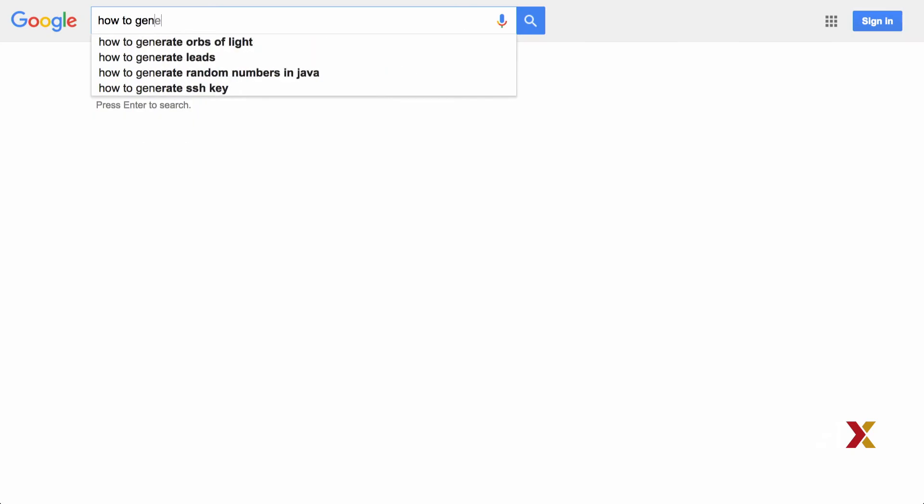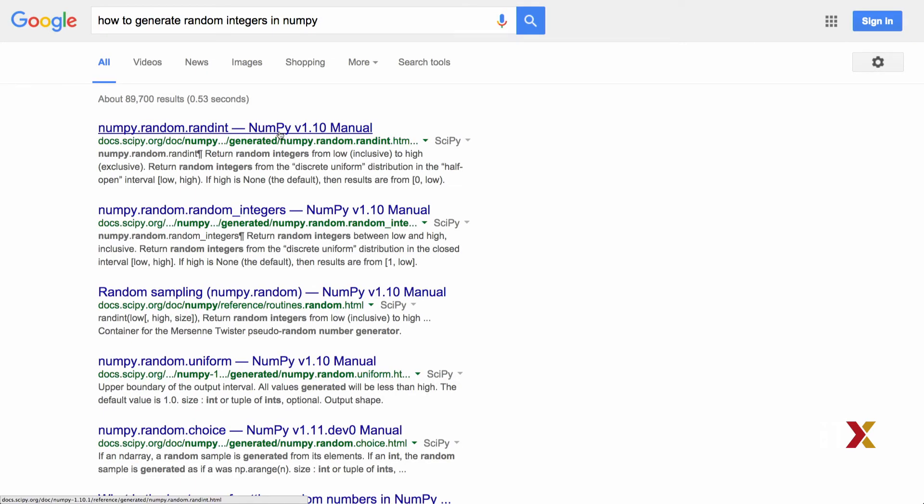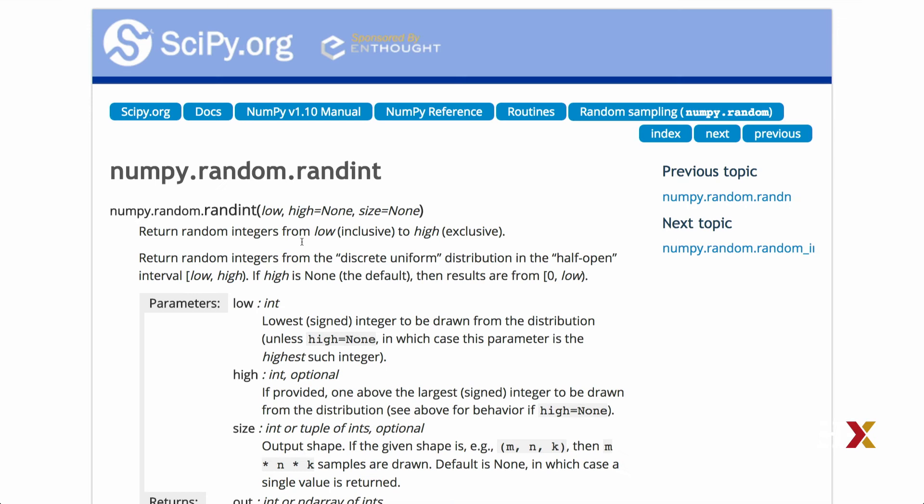The first hit is numpy.random.randint. That looks promising, so let's take a closer look at the help page. This function looks promising. If we look at the input arguments, we have to provide at least one argument, but we can potentially provide up to three different arguments.